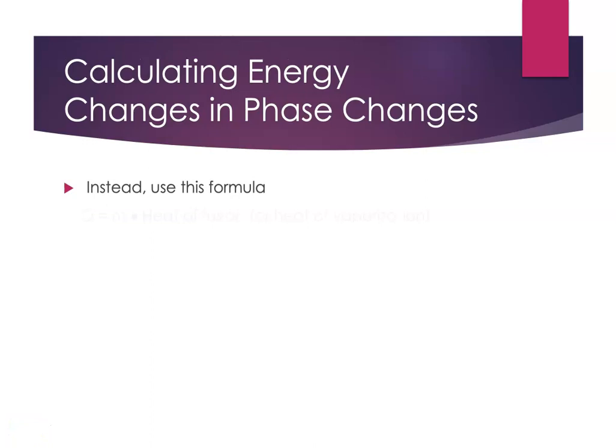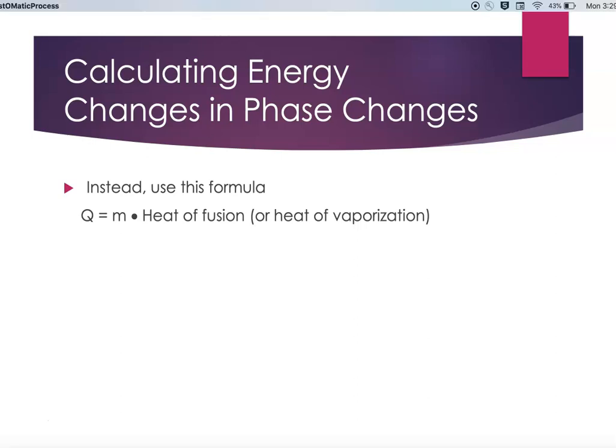Don't worry. We do have an appropriate formula. We'll use Q equals the mass times the heat of fusion, or Q equals the mass times the heat of vaporization.